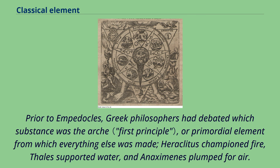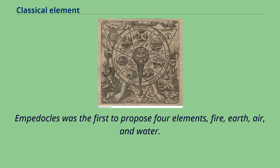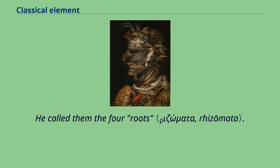Anaximander argued that the primordial substance was not any of the known substances, but could be transformed into them, and they into each other. Empedocles was the first to propose four elements — fire, earth, air, and water — and he called them the four roots.